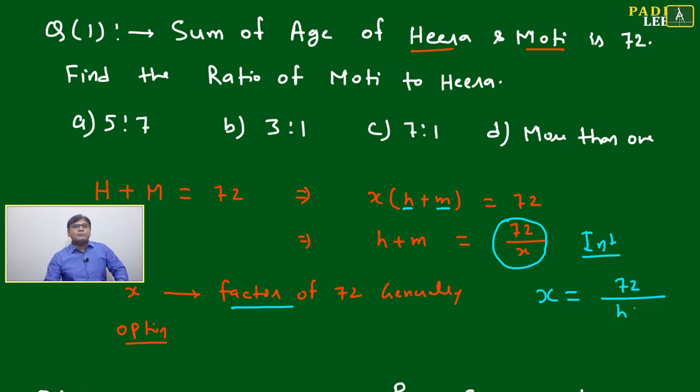We can also write X = 72/(h + m). If we're finding X, we look at h + m. If we want to find h + m, we look at X. Either approach works.